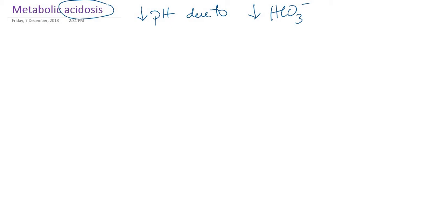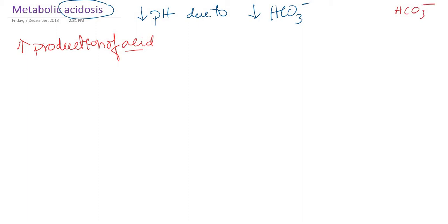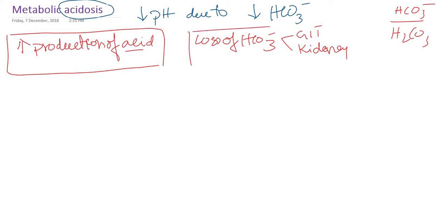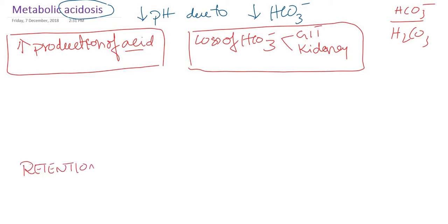What are the reasons for metabolic acidosis? There are three important causes. The first reason is increased production of acid. Another reason could be due to loss of bicarbonate — either in the gastrointestinal tract or by the kidney. Another important reason is retention of acid by the kidney. We will see each in detail.